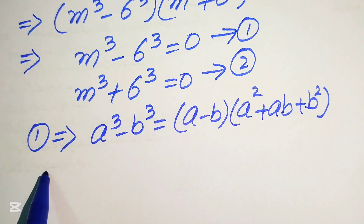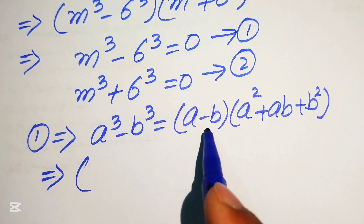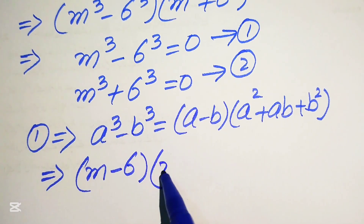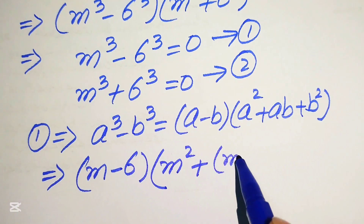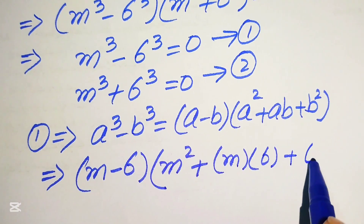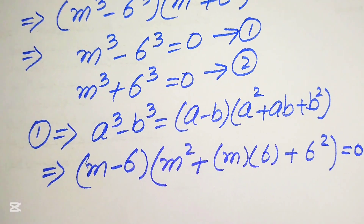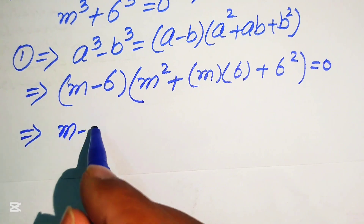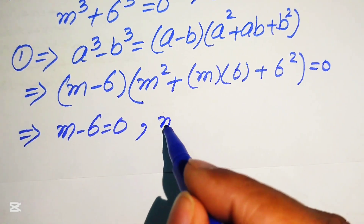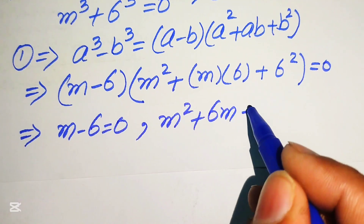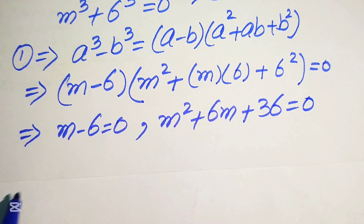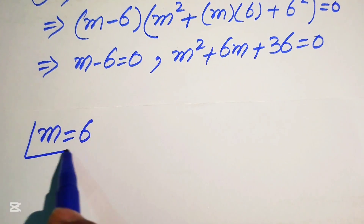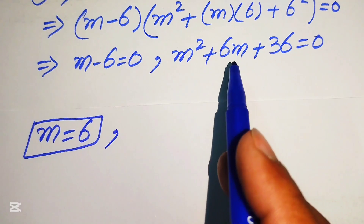According to this cubic formula, equation number 1 becomes m minus 6 times m squared plus 6m plus 36 equals to 0. Dividing into two sub-cases: m minus 6 equals to 0 gives m equals to 6. The second sub-case gives the quadratic m squared plus 6m plus 36 equals to 0, which we solve for the remaining values.